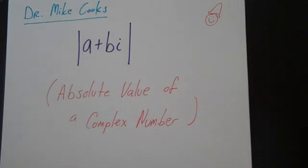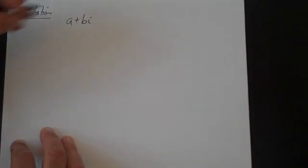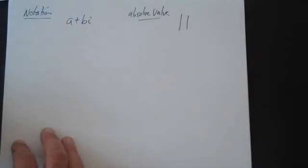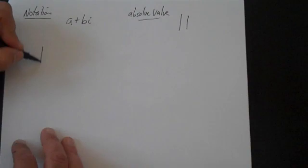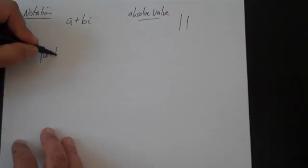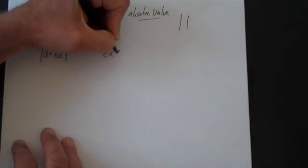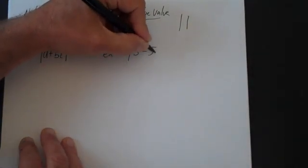Now let's look at how to find the absolute value of a complex number. First let's look at some notation. A complex number can be written as a plus bi, and the absolute value sign simply looks like this. An example of this would be the absolute value of 3 minus 5i.